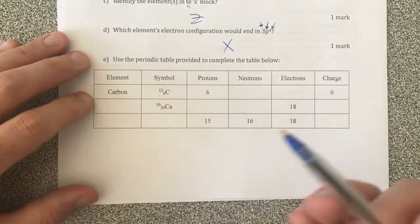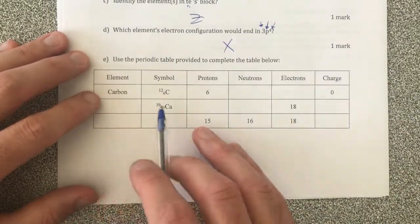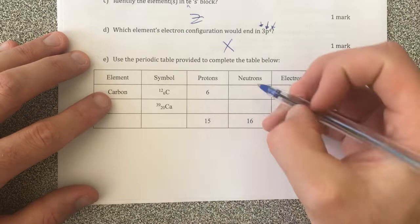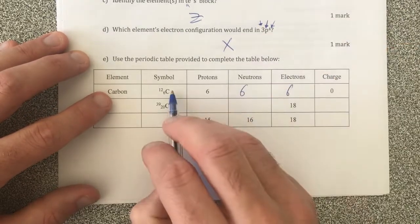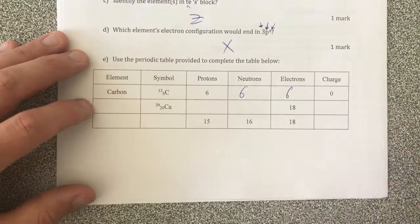Last question here is just filling in this, so let's just quickly fill it in. Carbon, neutrons is the difference, so that's going to be six electrons, same as protons because we have no charge on that, and the charge is clearly zero.